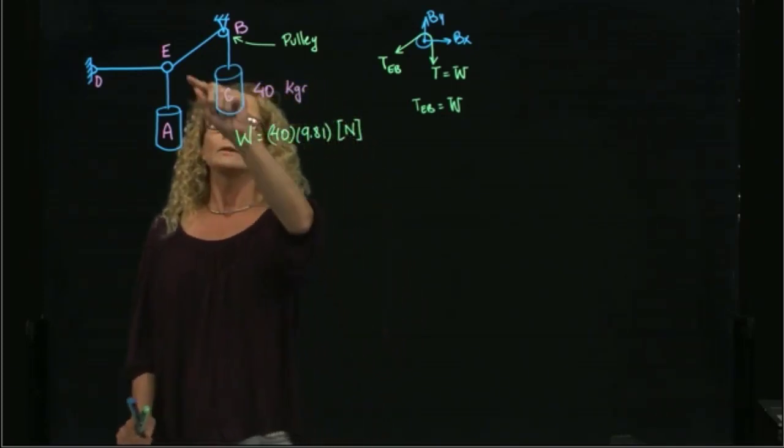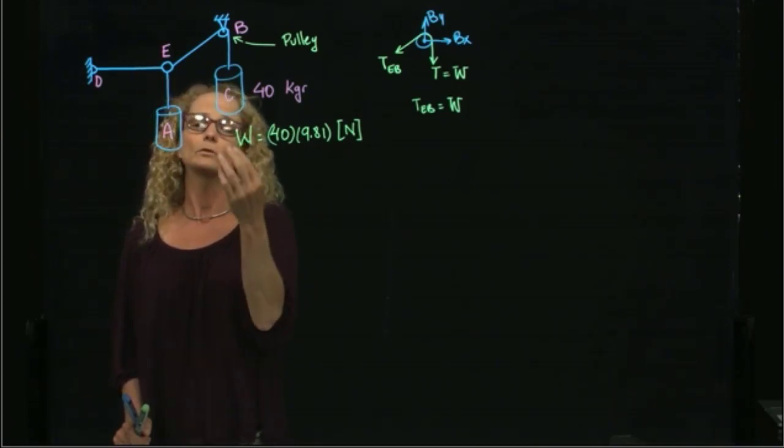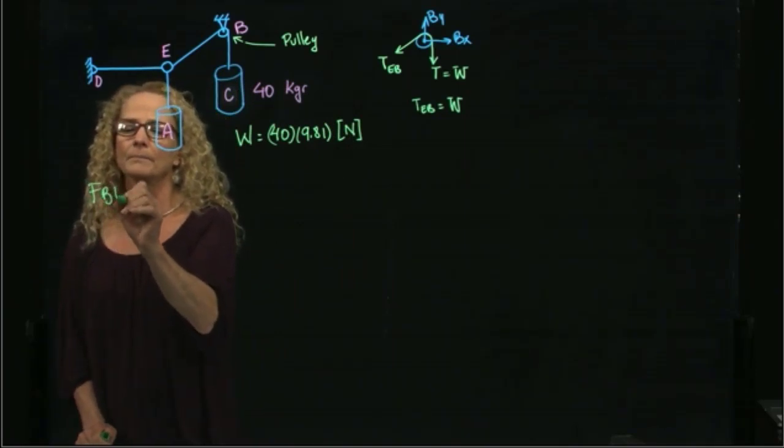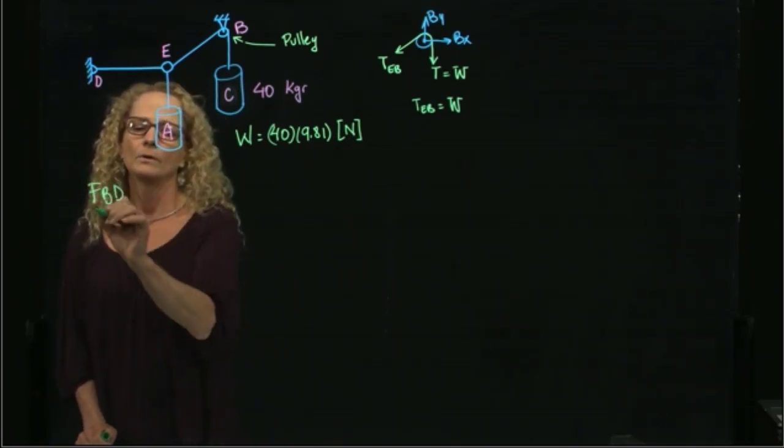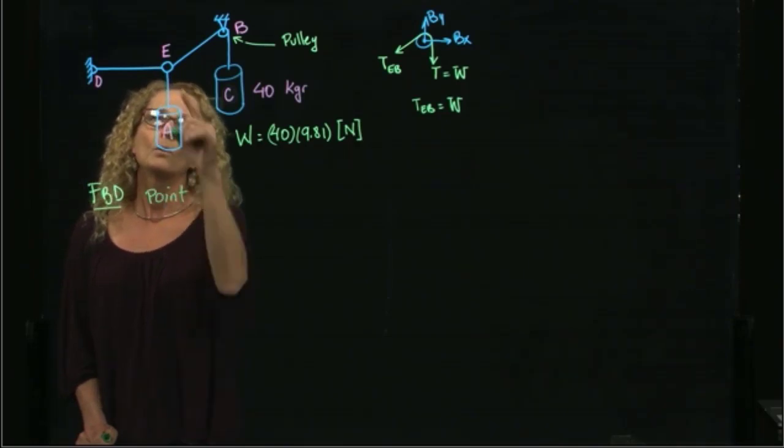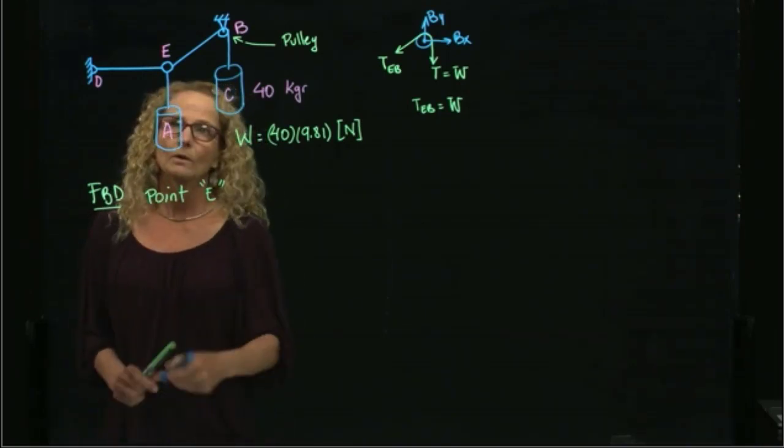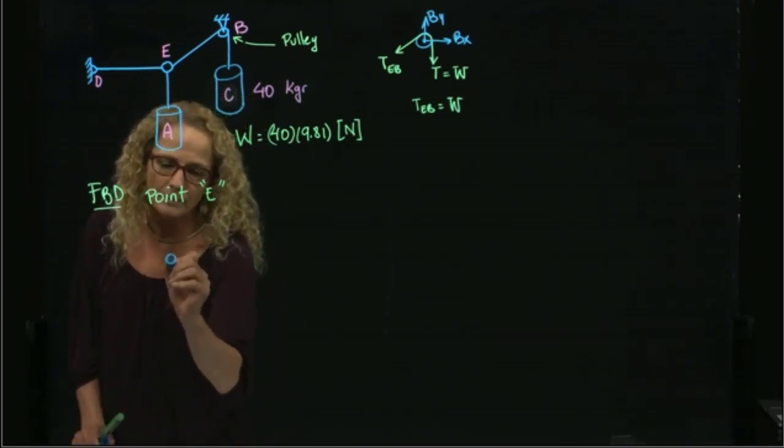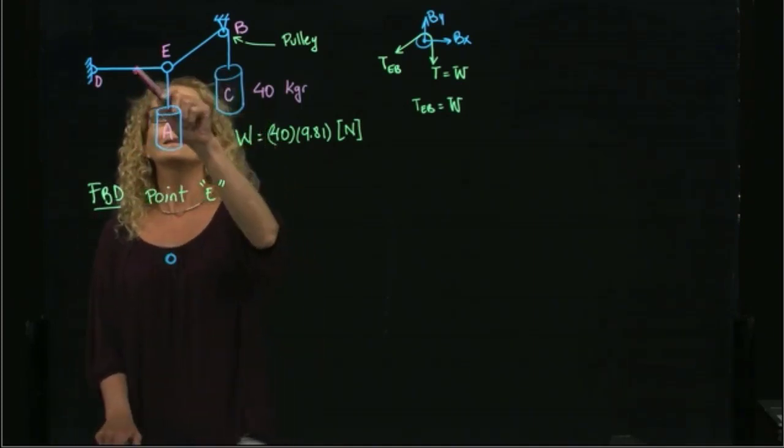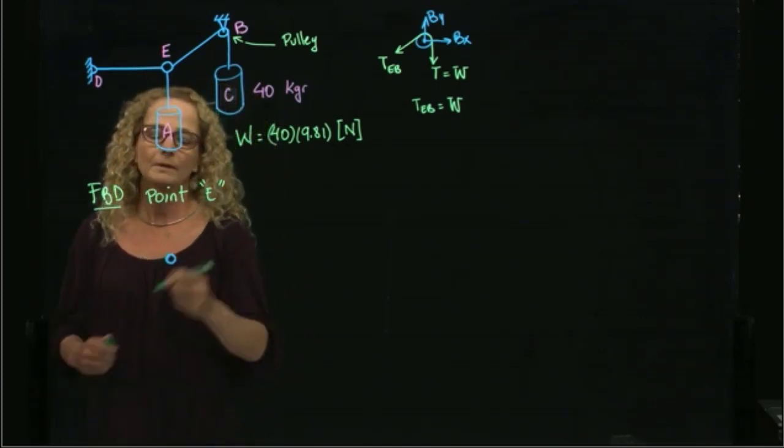So in order to find these two other tensions, we have to do the free body diagram. So let's draw the free body diagram of this point or joint E. So it's very important that we notice that we have two reactive forces, and this is a weight. So I can draw them, let me draw them here.